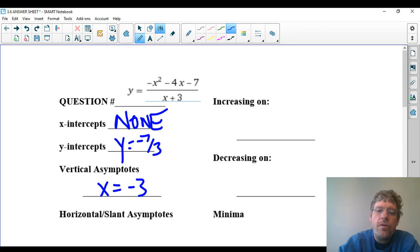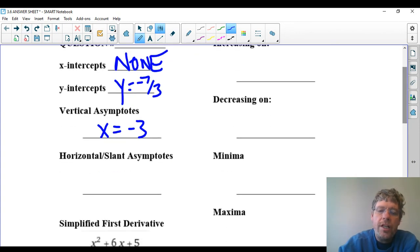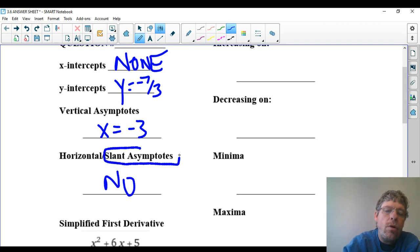Horizontal asymptotes. Well, the top degree is 2, the bottom degree is 1. Since the top degree is bigger than the bottom degree, there are no horizontal asymptotes. You may remember there is a slant—that's one bigger—but we're not going to deal with those right now. So we'll say no to the horizontal asymptotes.